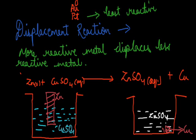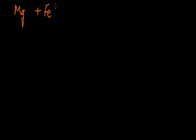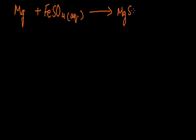You can compare the reactivity series to see whether the metal will be displaced or not. For example, magnesium treated with ferrous sulfate (FeSO4 solution) — will magnesium displace iron? Yes, magnesium is higher in the reactivity series than iron, so it will displace iron. There will be formation of magnesium sulfate plus iron. The metals higher in the reactivity series displace metals which are lower.